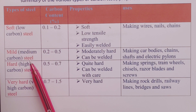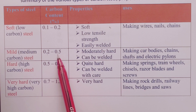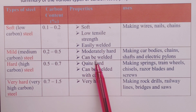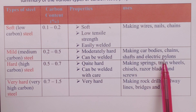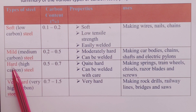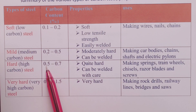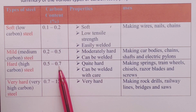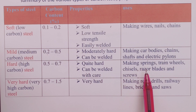Mild steel or medium carbon steel has a carbon content of between 0.2% to 0.5%. It is moderately hard, can be welded, and is used to make car bodies, chains, shafts, and electric pylons. Hard steel or high carbon steel has a percentage carbon content of between 0.5% to 0.7%. This steel is quite hard and can only be welded with care. It is used for making springs, train wheels, chisels, razor blades, and screws.